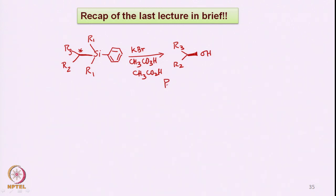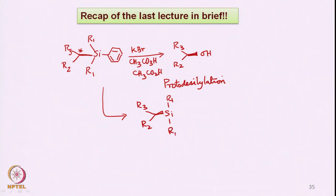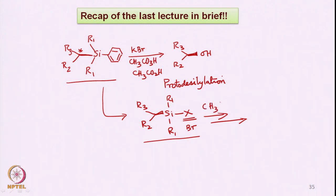What we did was proto-desilylation, and we proceeded via the corresponding halide which is present on the silicon, where the phenyl ring was replaced by X, which is a bromine. Then we went further with this conversion of the silicon substrate to the corresponding silicon halide substrate, and then we did the oxidation with the peracid. So you had CH₃CO₃H, which underwent a Baeyer-Villiger type of oxidation, and finally basic workup followed by protonation led to the corresponding alcohol.